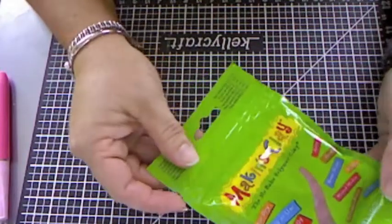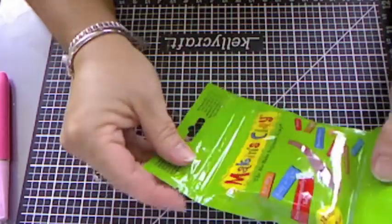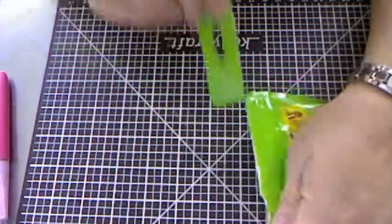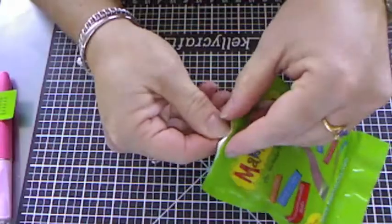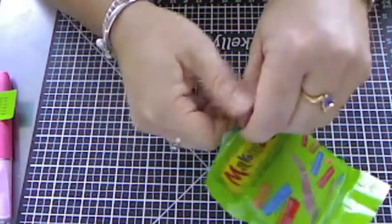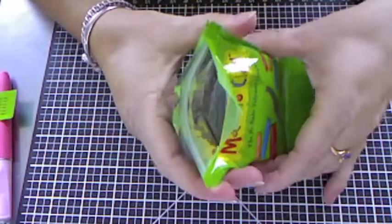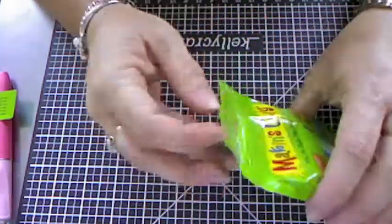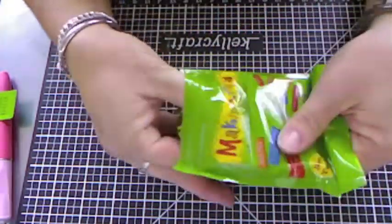To get started, we're going to open our package of Macon's clay. This is the 60-gram package of their color Merlot from their Vineyard Tones collection. These great 60-gram packages have a ziplock inside which is perfect for storing the clay while you're working with it.